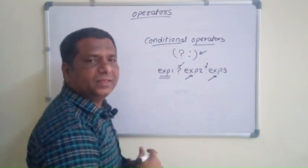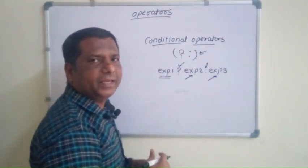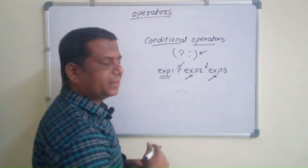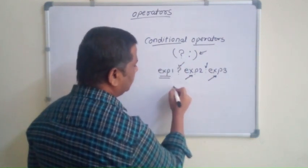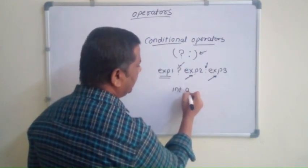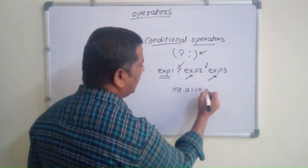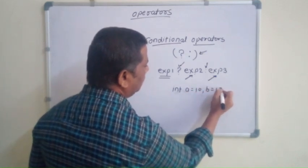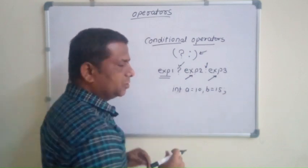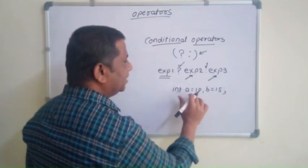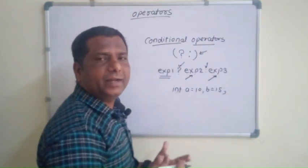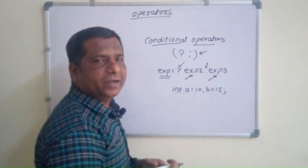So chaliyye, iska example dhekhthe hai, usse aapka or clear ho jayegah ki yhe operators kaysse work kertate hai. Suppose, humare dho integer number hai, int a is equal to 10 and b is equal to 15. So suppose, humain in dho number mein se konnsa greater number hai, yhe condition check karna hai.